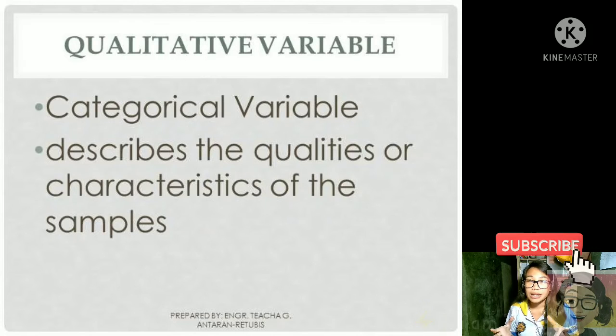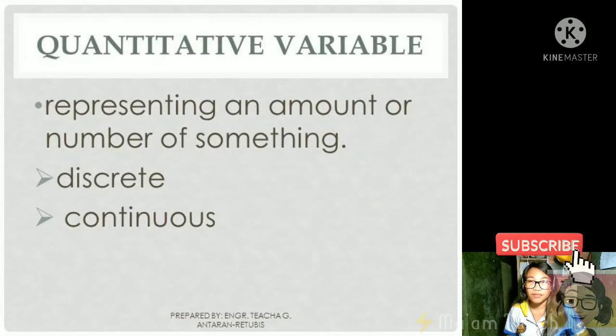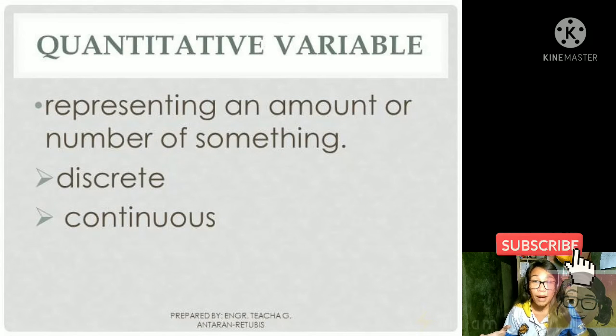Qualitative are something that describes maybe a quality or a characteristic of a sample. While the quantitative, it represents the amount or a number—from the term quantity.